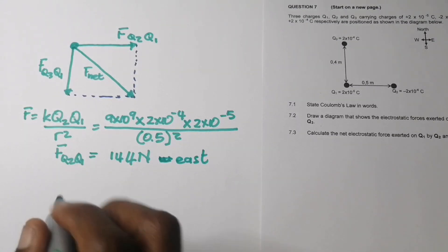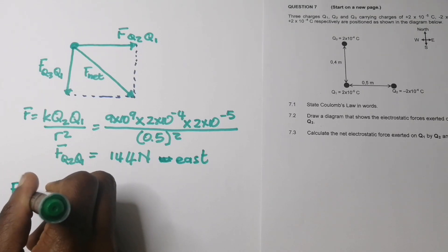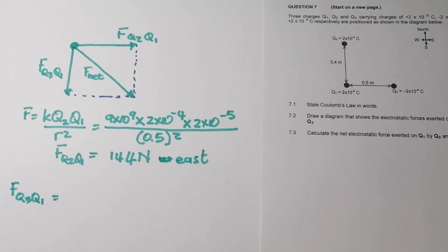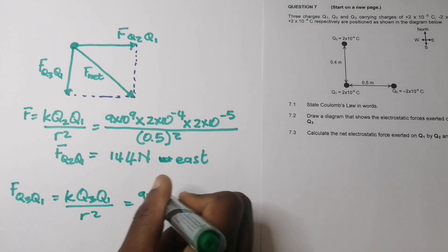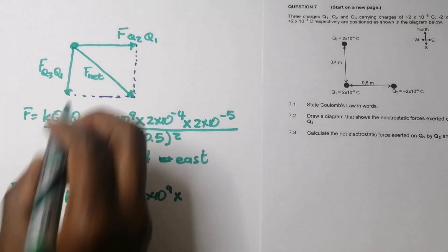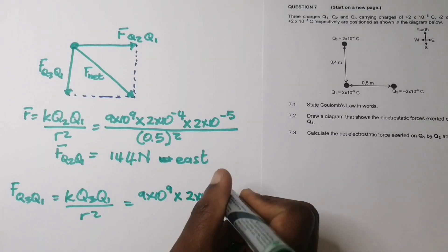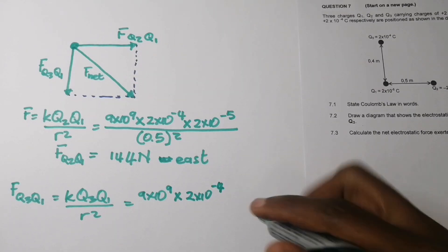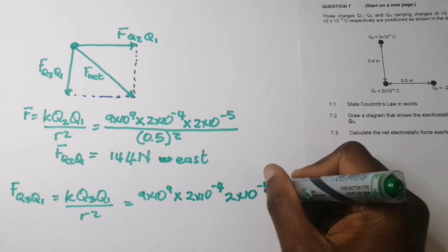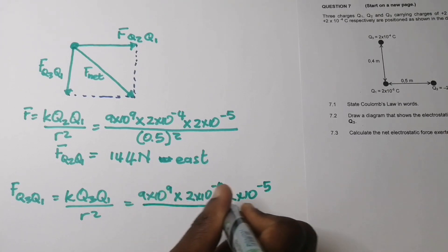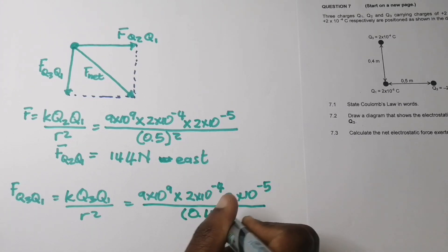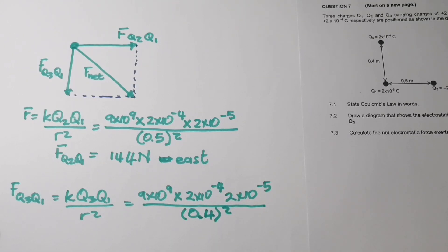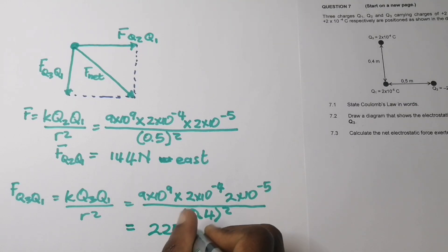Now we do the same for Q3 on Q1. F(Q3 on Q1) = kQ3Q1 / r² = (9×10⁹ × 2×10⁻⁴ × 2×10⁻⁵) / (0.4)². The answer is 225 N, and the direction of that force is to the south.